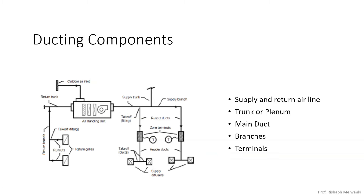Here this diagram has been introduced to show you the convention. A symbol with two diagonals indicates supply air, whereas if you consider return grills they are shown with one diagonal. So one diagonal means return grill.